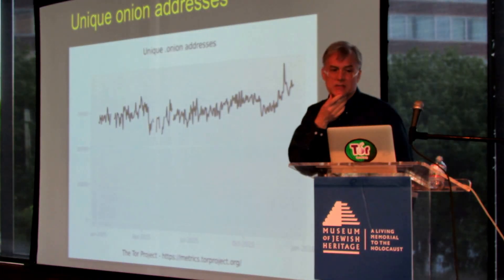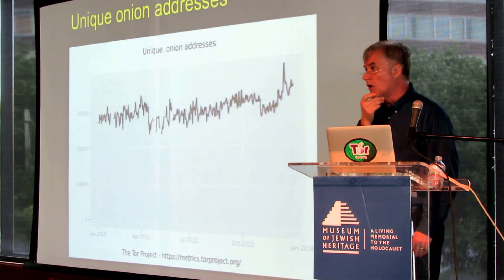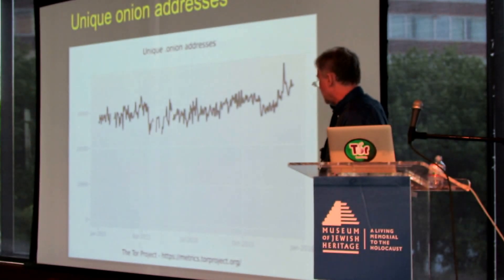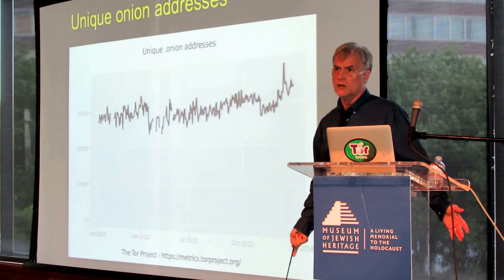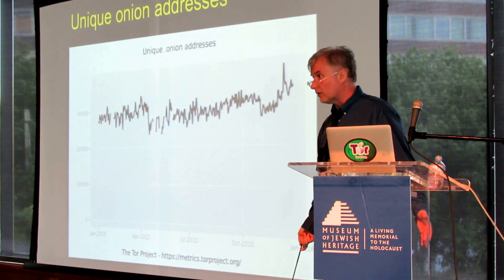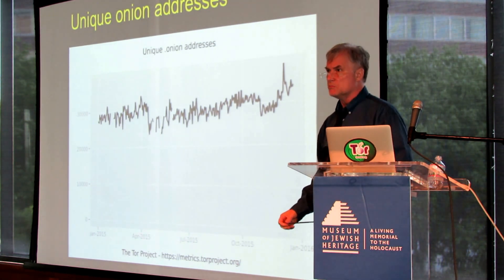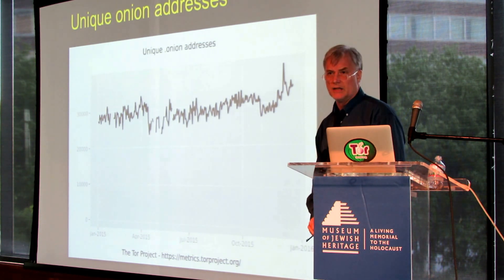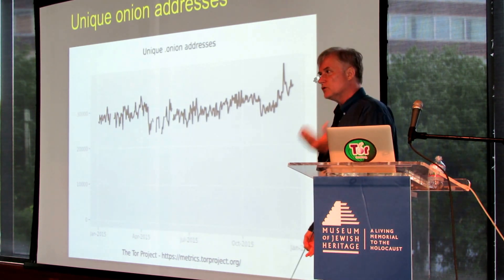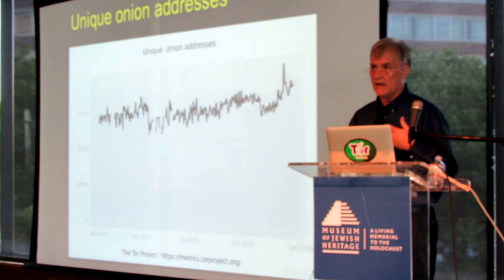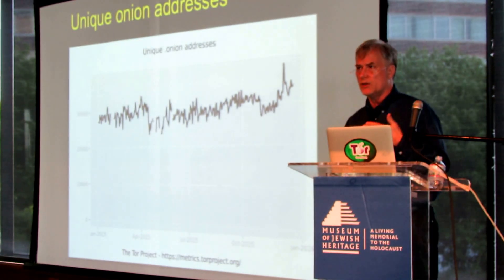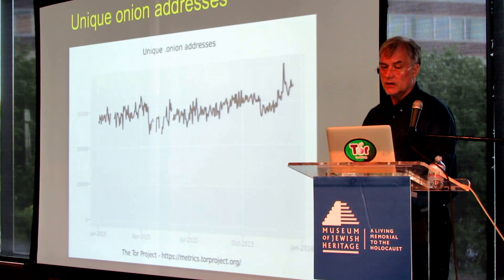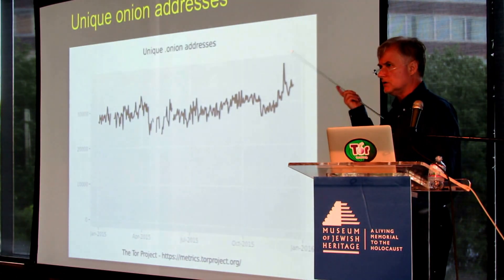Now, how big is Onion space? It's actually pretty small. It's grown a little bit — this data goes only through last January, and it's about 40,000 now; there are about 40,000 unique Onion addresses out there. But that's a bit misleading because most of those are not reachable. At any given time there's maybe 6,000–8,000 that you can actually connect to, and then a couple thousand that you can actually be connecting to. So this is not a very large space. Nonetheless, they're hidden things — how do you find them?